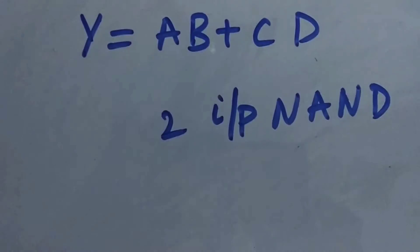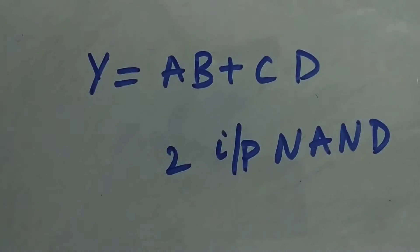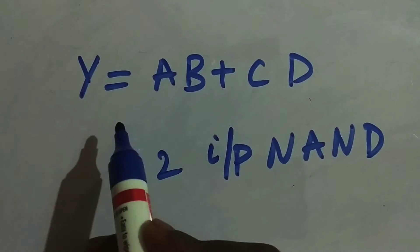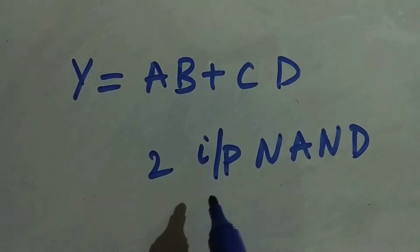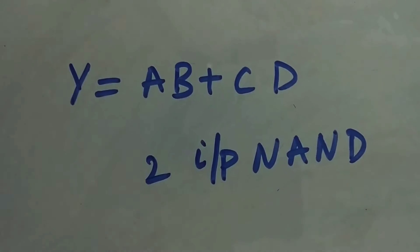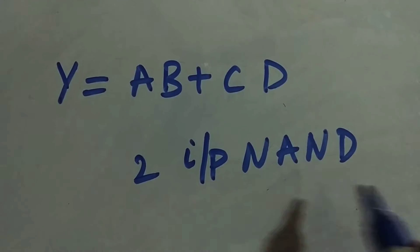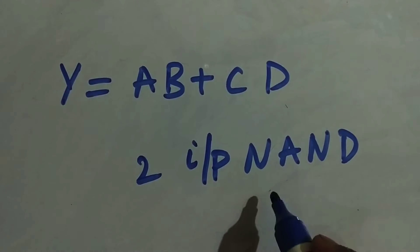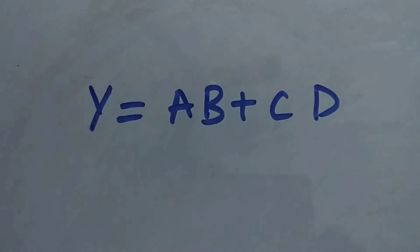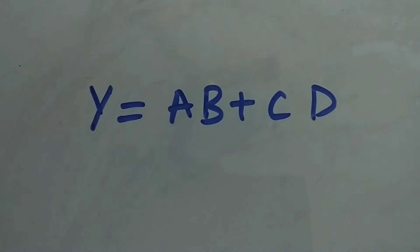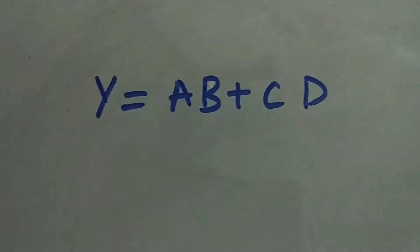Let's take our first example: Y equals AB plus CD, and we want to realize it using only two-input NAND gates. So how can we do this? It's quite simple — just follow these steps.